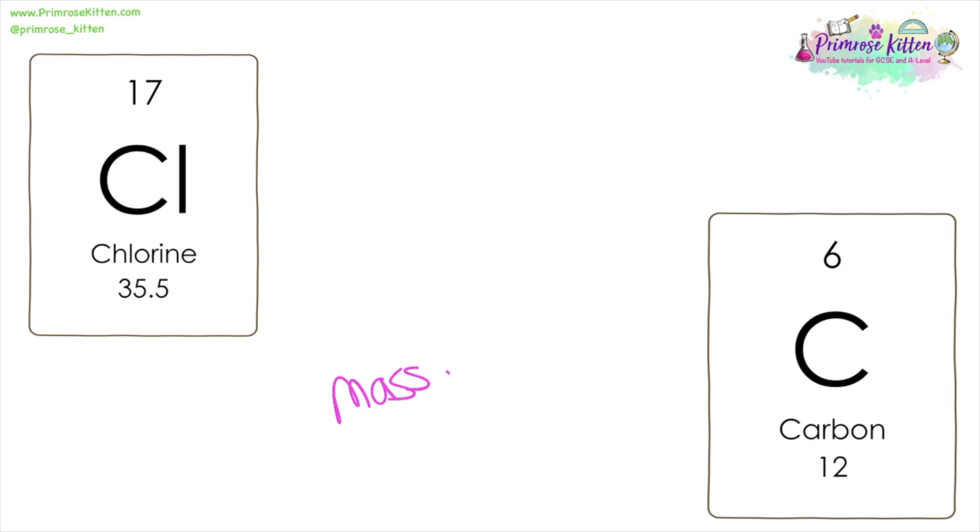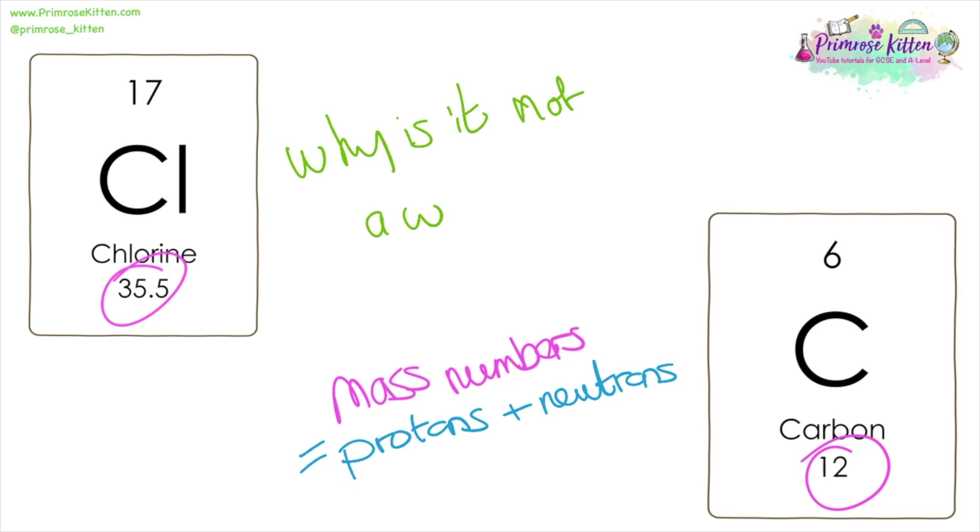Have you ever wondered about the mass numbers on the periodic table? Chlorine is 35.5 and carbon is 12. Now we know the mass numbers are made up of protons plus neutrons, so how has chlorine got half a neutron? Why is it not a whole number?